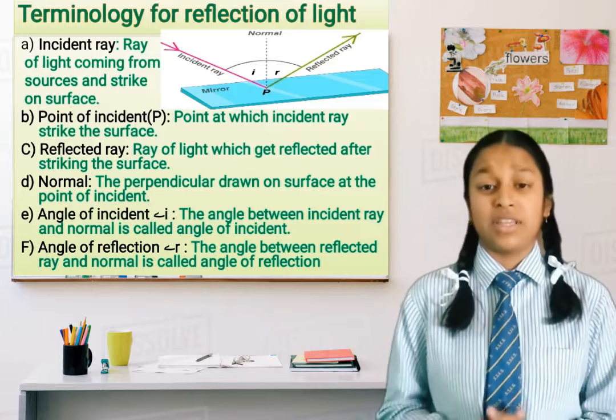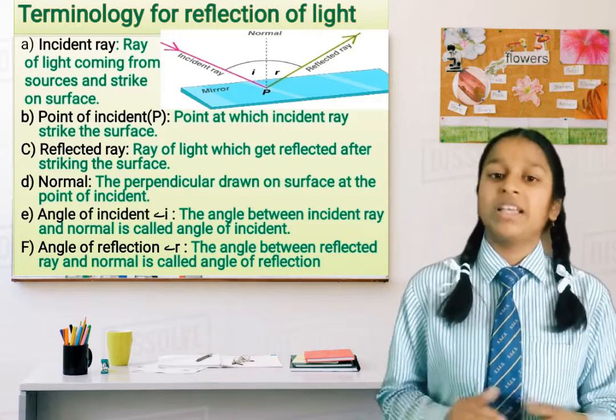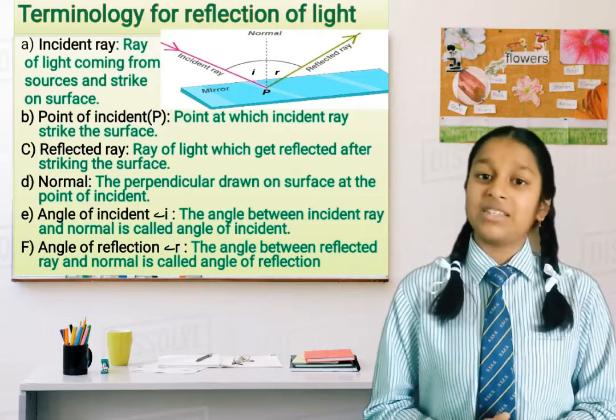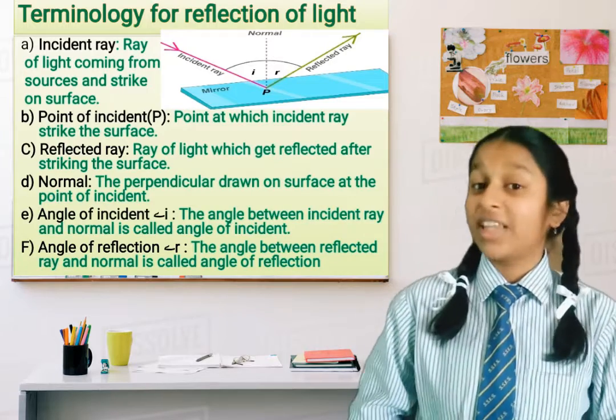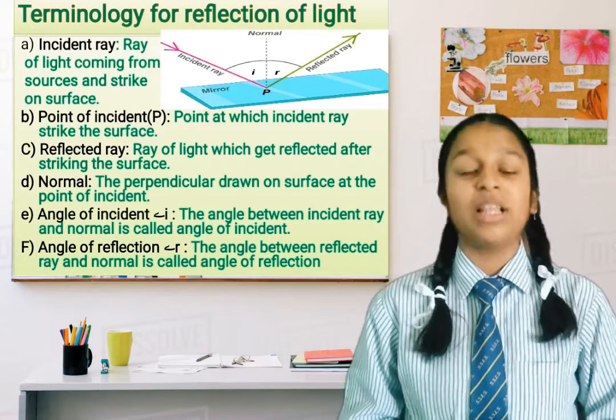Angle of incidence: the angle between incident ray and normal is called angle of incidence. Angle of reflection: the angle between reflected ray and normal is called angle of reflection.